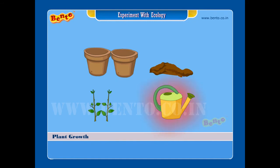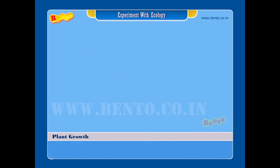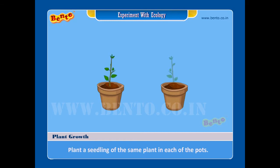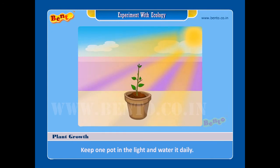Procedure. Step 1: Fill some garden soil into the two pots. Step 2: Plant a seedling of the same plant in each of the pots. Step 3: Keep one pot in the light and water it daily.